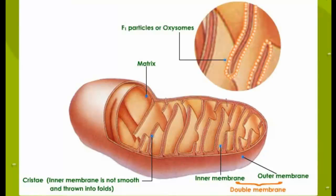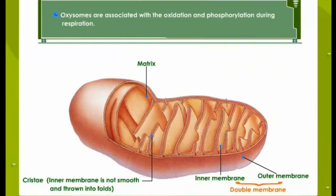The inner membrane or cristae bear spherical structures called F1 particles or oxysomes. These are associated with the oxidation and phosphorylation during respiration. They catalyze ATP synthesis. This is the reason why mitochondria are called the powerhouses of the cell.